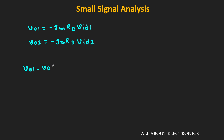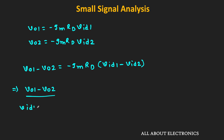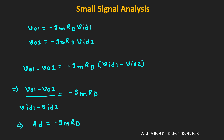Therefore, vo1 minus vo2 equals minus gm times Rd times (vid1 minus vid2). This ratio of differential output to differential input represents the differential gain of this differential amplifier. The differential gain equals minus gm times Rd. In this way, using the small signal analysis, we have found the gain of this differential amplifier.